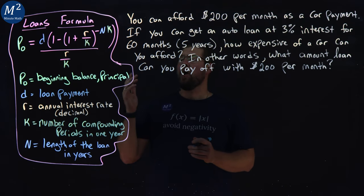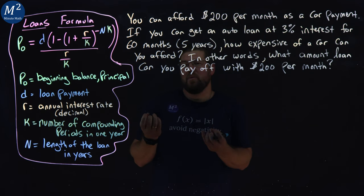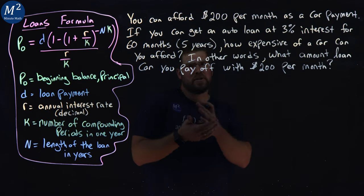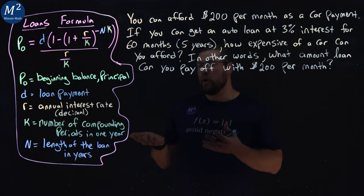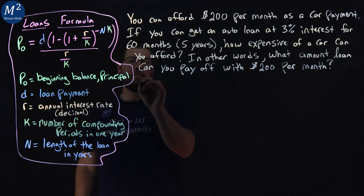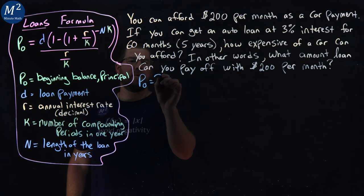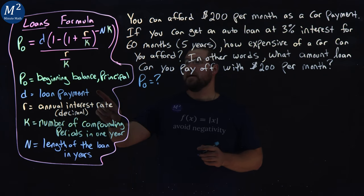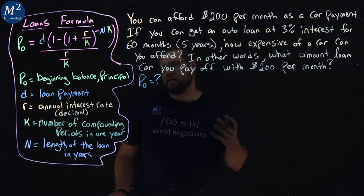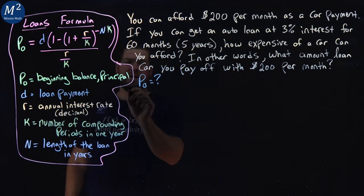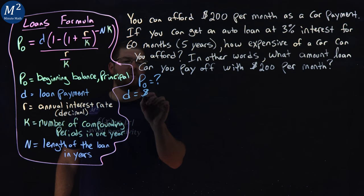So our P sub O, our beginning balance, that's what we want to find out. We want to know how much of a car we can afford, how big of an initial loan amount, a principal that we can have. So P sub O is going to be what we're finding. D is a loan payment. We found that we can pay $200 per month. That's what was in our budget, so our D value is going to be 200.